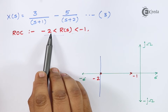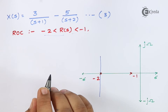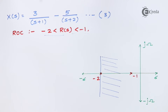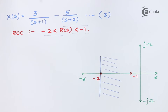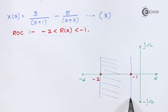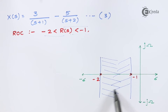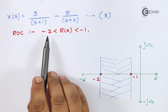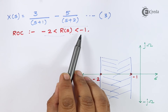The ROC is greater than -2, meaning it exists on the right-hand side of the pole at s = -2. The ROC is also less than -1, meaning it exists on the left-hand side of the pole at s = -1. Drawing these regions, the overall ROC exists between -2 and -1. So the pole at -2 produces a right-sided ROC, and the pole at -1 produces a left-sided ROC.